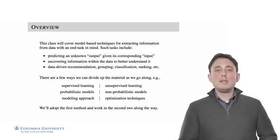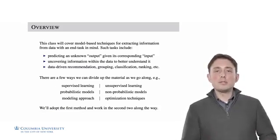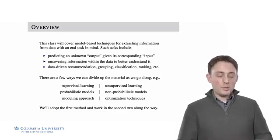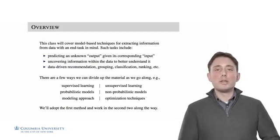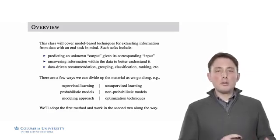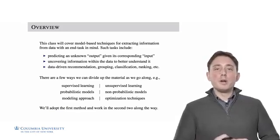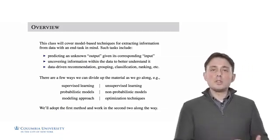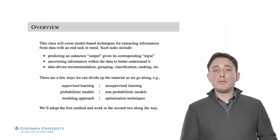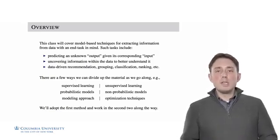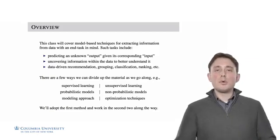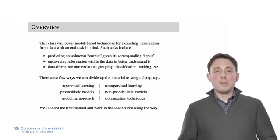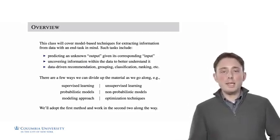In a course like this, there are a few ways that the information can be presented, different orderings of the information. One example would be to partition it in one half supervised learning, the other half unsupervised learning. But we could also think in terms of probabilistic models versus non-probabilistic models. There's also a dichotomy between modeling approaches versus optimization approaches, which is very tightly linked with modeling approaches.